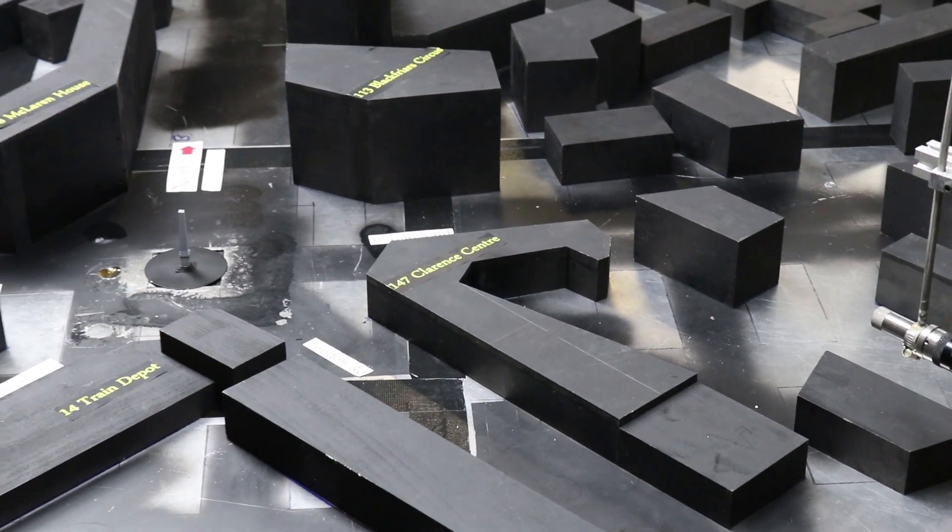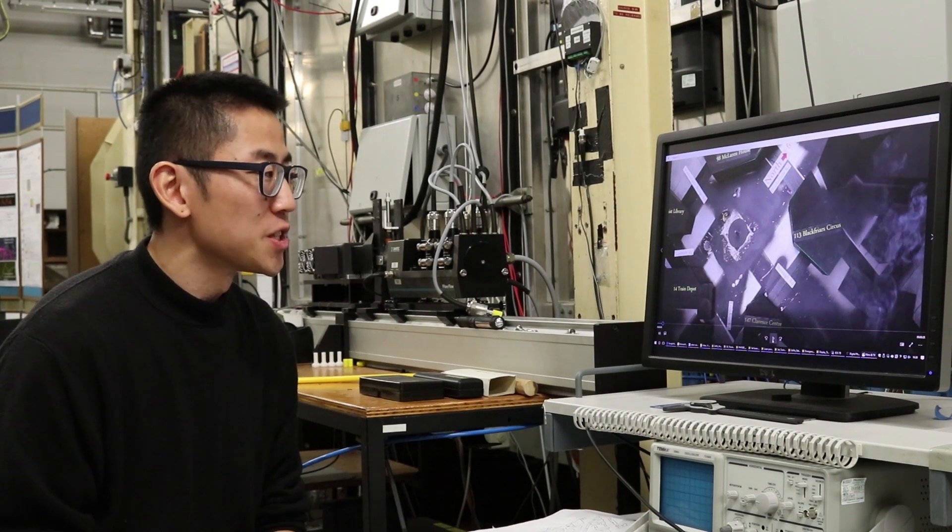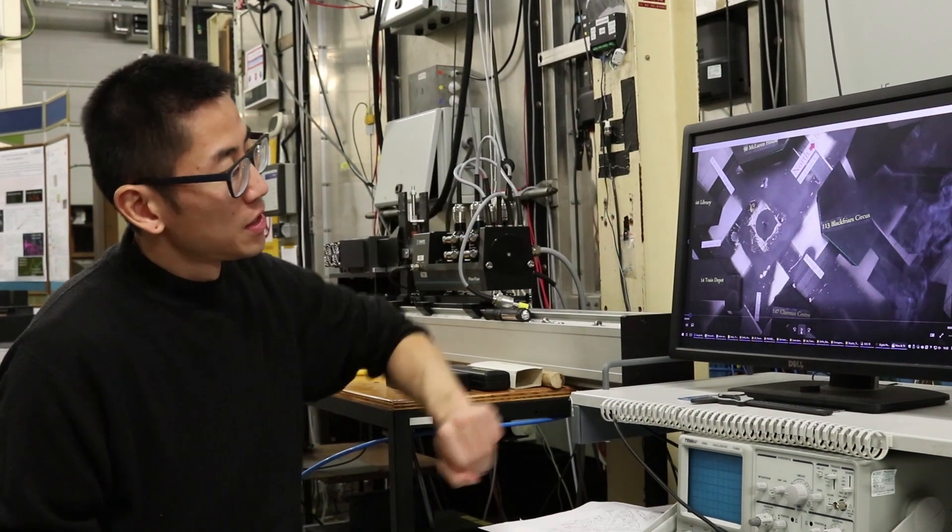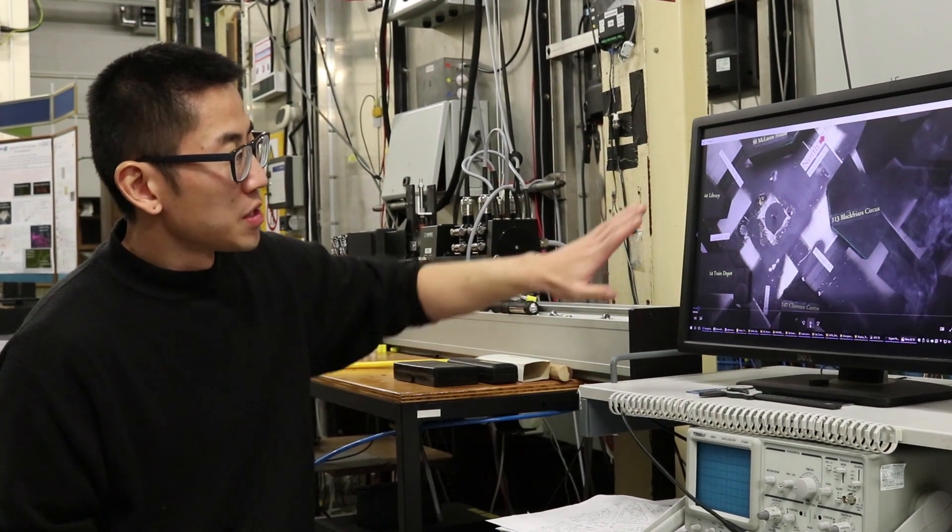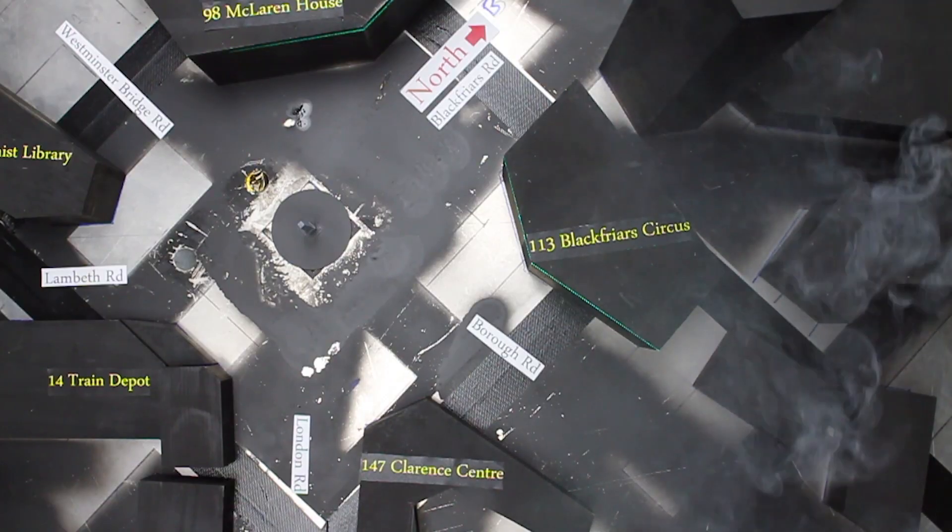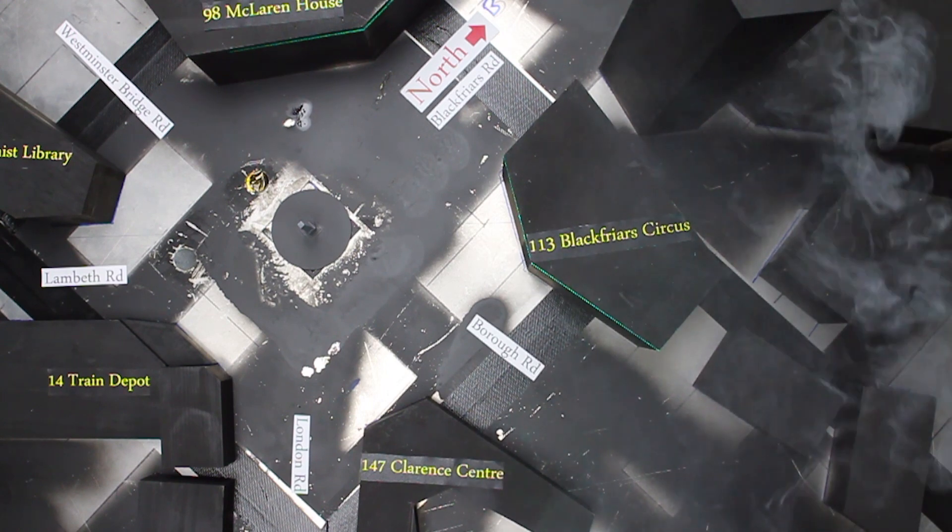And our courtyard is on the other side. We've recorded some of our visualization results, and we had a camera mounted looking down on the model. Essentially we're releasing smoke up here and we're looking at how the smoke travels downwind to the Clarence Centre site.